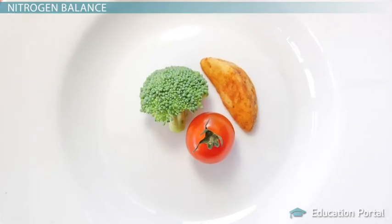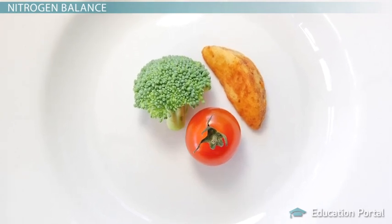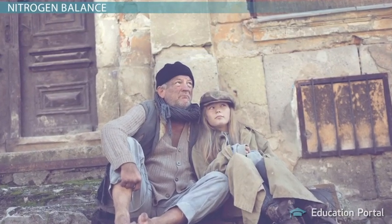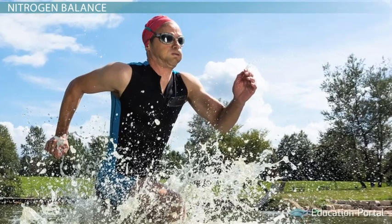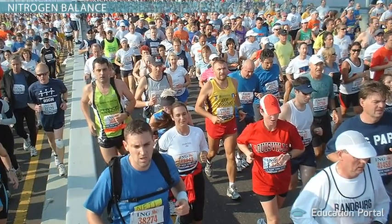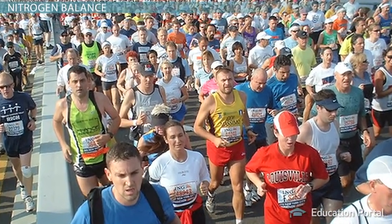This can occur in individuals that do not have adequate amounts of protein-containing foods available to them, as we might see in people living in undeveloped countries, or in dieters who reduce their nutrient or calorie intake too severely. It can also happen to athletes who overtrain. For example, if a marathon runner trains too hard, his body will break down protein at too high of a rate to keep up with.